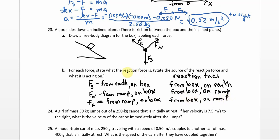Reaction forces are easy if you just concentrate on whatever force you're talking about — where it's coming from and what it's acting on. The reaction force is always just flipping those. These three action-reaction pairs: the three on the box showed up in the free-body diagram. The other three don't — one would show up in a free-body diagram of the Earth, and the other two in a free-body diagram of the ramp.